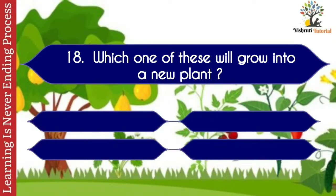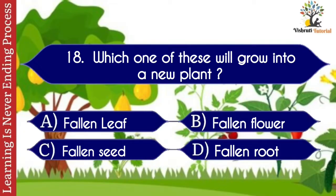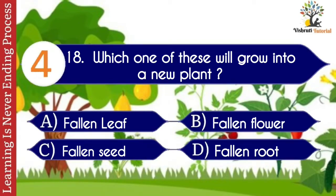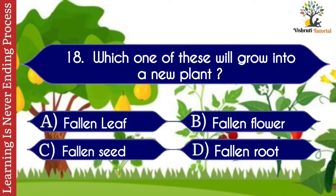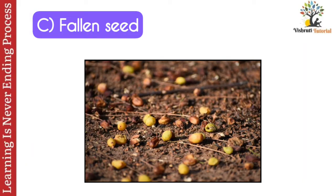Question number eighteen: which one of these will grow into a new plant? Options: A. Fallen leaf, B. Fallen flower, C. Fallen seed, D. Fallen root. The correct answer is C. Fallen seed. A fallen seed will help to grow into a new plant.